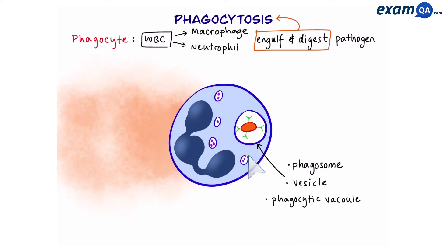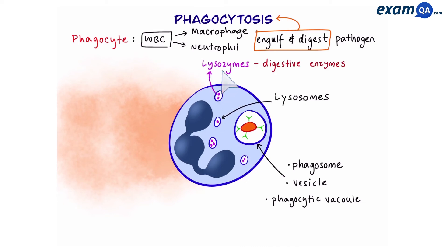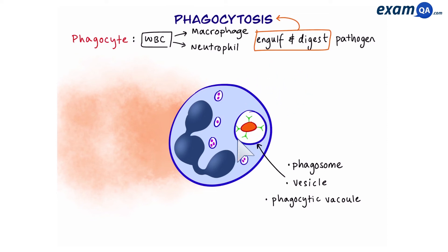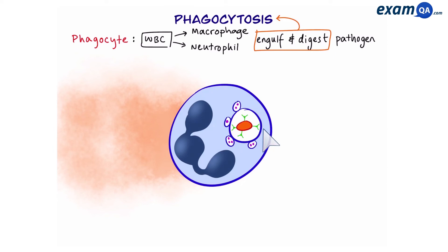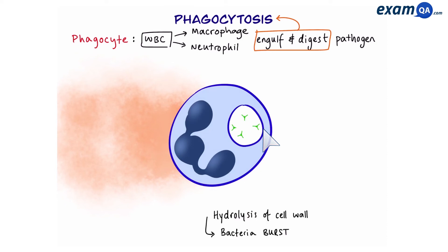The phagocyte also has other balls inside it called lysosomes — vesicles that contain digestive enzymes. In the next stage, the lysosomes move towards the pathogen and fuse with the phagosome. The digestive enzymes are released and break down the pathogen, mainly by hydrolyzing the cell wall, causing pathogens like bacteria to burst and die.